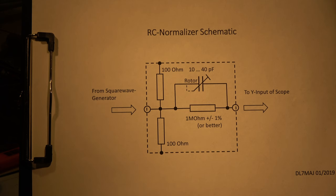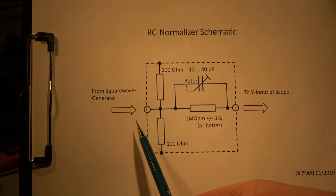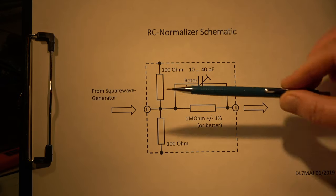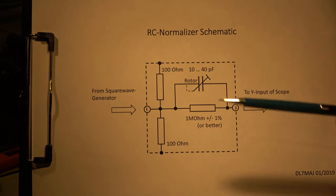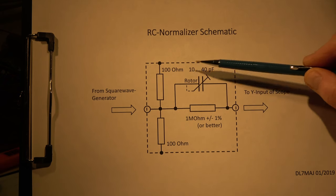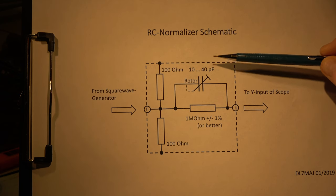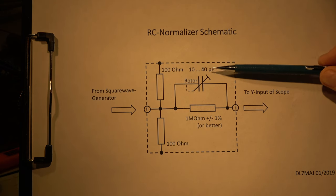Now, how to build such a normalizer? The schematic is very simple. From the square wave generator we have an input BNC connector. I have chosen two resistors - 100 ohms in parallel - so we have exactly 50 ohms. It's important to have a perfect termination, and this value has to be very low compared to 1 megaohm. And in parallel we have a small variable capacitor in the range of 10 to 40 picofarad. It's not absolutely necessary - maybe 5 to 30 is also good - but whatever suits your scope, we should be in this range.